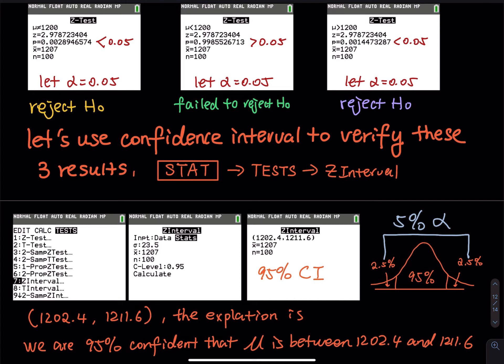How do you know this is a 95% confidence interval? Look at the graph on the right. You have 5% alpha — what is 100 minus 5? That is equal to 95. Because they must add up to 100%. In a confidence interval, 95% means you have 95% in the middle and 5% left over: 2.5% on the left and 2.5% on the right, adding up to 5%. So when alpha equals 5%, this must be a 95% confidence interval.